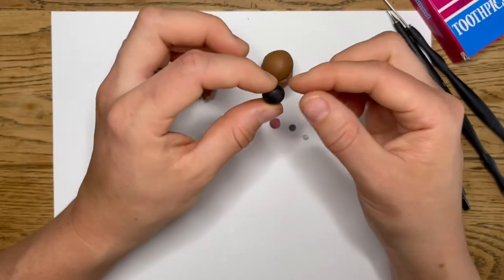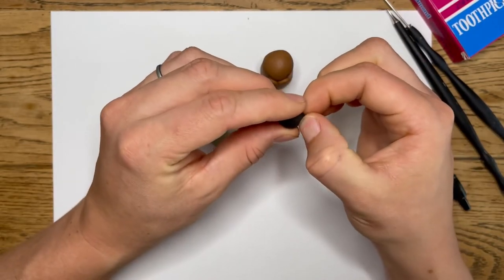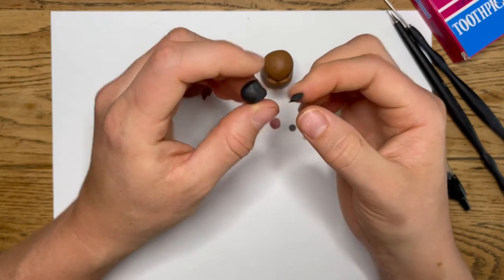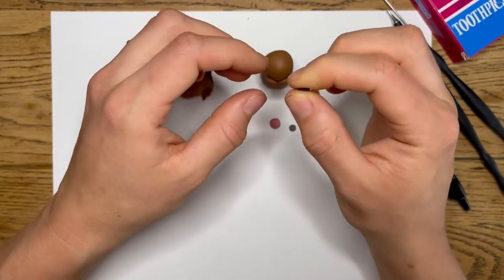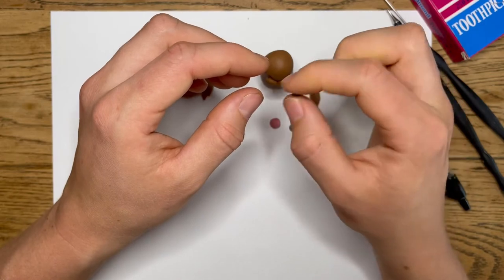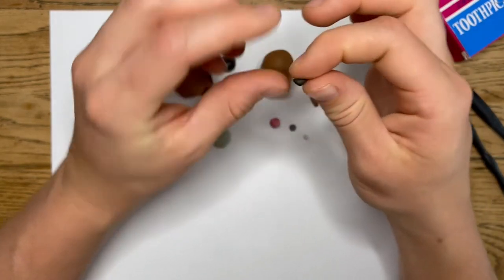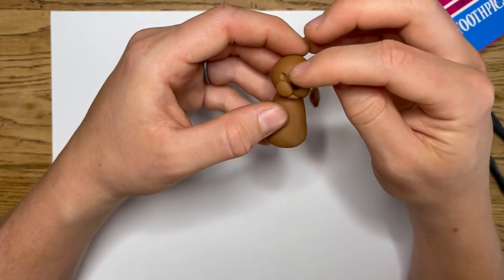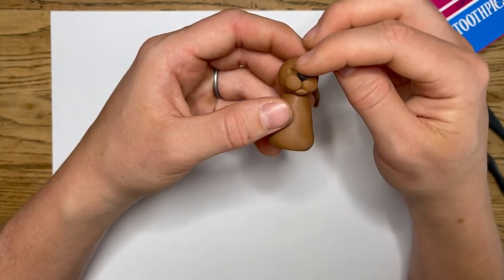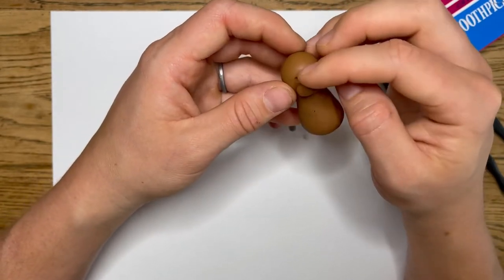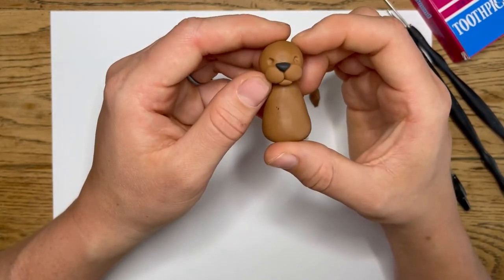Now we're going to take our nose color and eye color, take about as much as you took for the lower portion of the mouth, roll it into a ball, and then we're going to pinch it between our fingers, like so. And then, you're going to set that on there, see if you like the size. If it's too big, take it off and redo. If it's too small, take it off and add more.